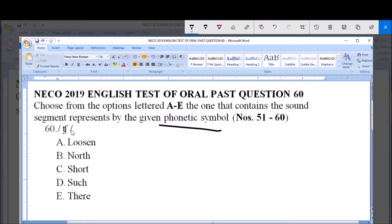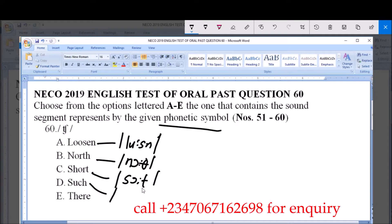So option A is pronounced as 'loosen'. Option B is pronounced as 'north' with the sign theta. Option C is 'short', and option D is pronounced as 'such'.